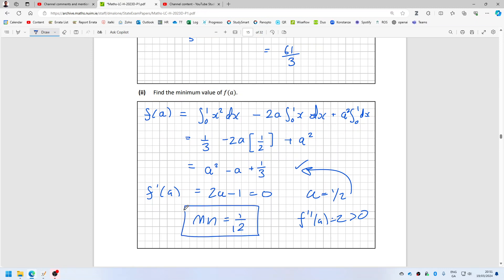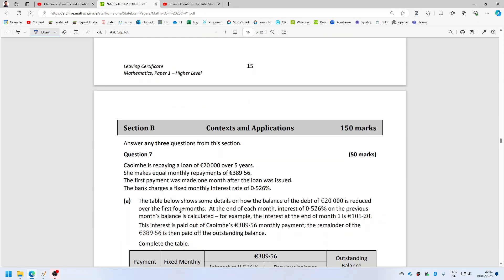So yeah, one over 12, it looks like. Minus one is a half. Let's double check that a half squared minus a half plus one over three. Yeah, okay, let's be part two done quite interesting.